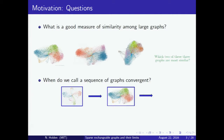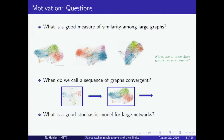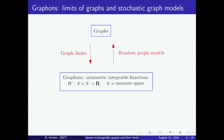We're also interested in convergence of graphs. If we're given a sequence of real numbers, we all know what it means for the sequence to converge. But in the setting of graphs, it's less clear what it means for a sequence of graphs to converge. Finally, we're interested in the modeling of networks — if we want to model a social network, what is the best model we can use, and what properties should the graphs have? We will see how we can approach these questions by using graphons.